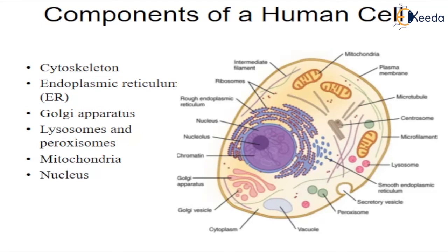Mitochondria. Spherical to rod-shaped organelles with a double membrane. The inner membrane is enfolded many times, forming a series of projections. Mitochondria are complex organelles that convert energy from food into a form that the cell can use. They have their own genetic material separate from the DNA in the nucleus and can make copies of themselves.